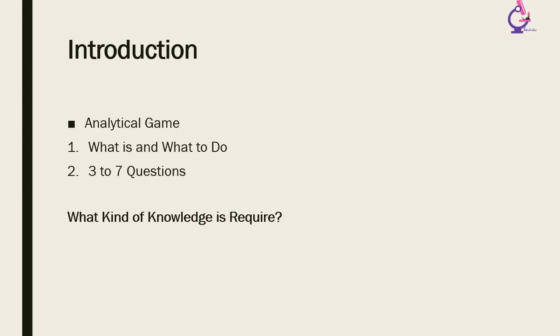Each analytical reasoning set consists of what is and what to do, explaining the actual situation, limitations, related statements, and sometimes other helpful material. Analytical reasoning also consists of 3 to 7 questions that check understanding of a complex situation and its implications.